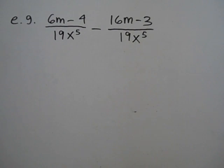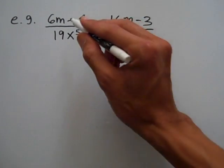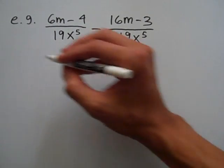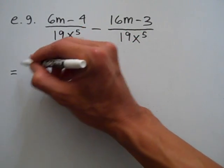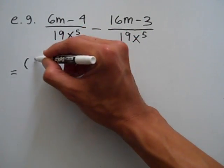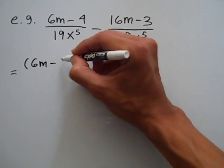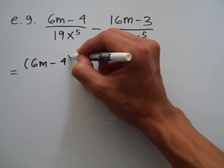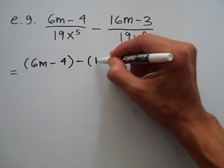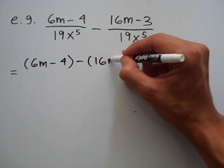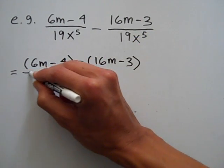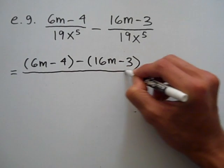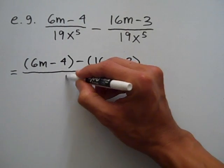It's very similar to addition, but in this case I'm going to be subtracting the numerators instead of adding them as in the previous example. So I've got 6m minus 4 minus 16m minus 3, and I keep the common denominator which is 19x to the 5th power.